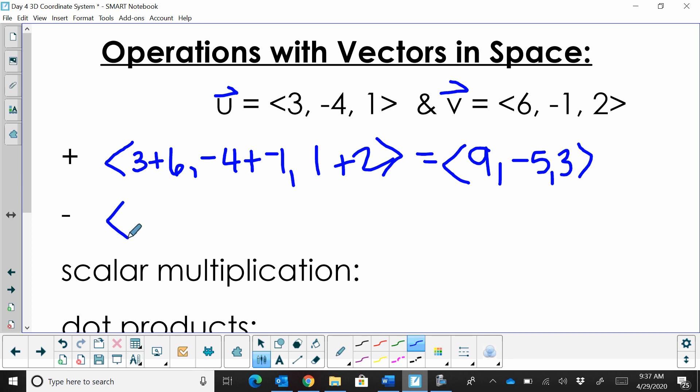Same thing works with subtracting. So let's say we're going to take u minus v. Of course order does matter on subtraction, so you would take the u coordinate u minus the v, u minus the v, u minus the v. Be careful with the double negatives, and u minus v. So the coordinates for that position would be negative 3, negative 5, and negative 1. Very simple to add and subtract.